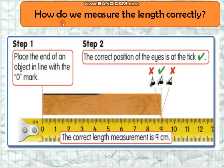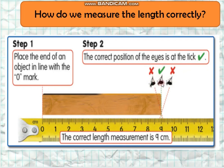How do we measure the length correctly? You can also refer to this activity in your textbook, page 7. Step 1: Place the end of the object in line with the 0 mark — this is the 0 mark. Step 2: The correct position of the eyes is at the tip. The correct length measurement is 9 cm.